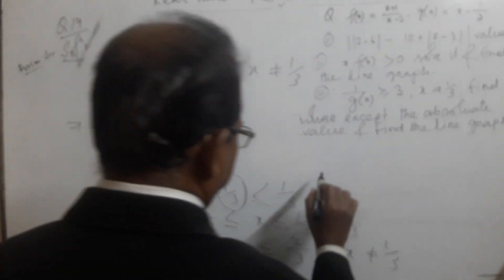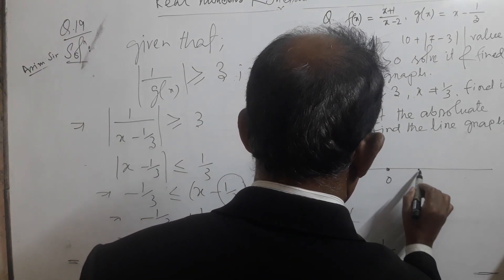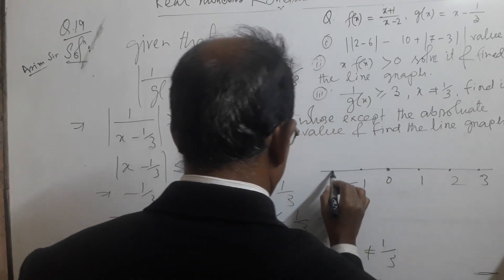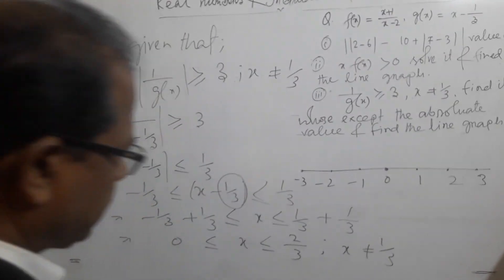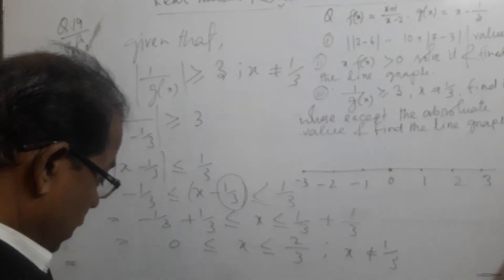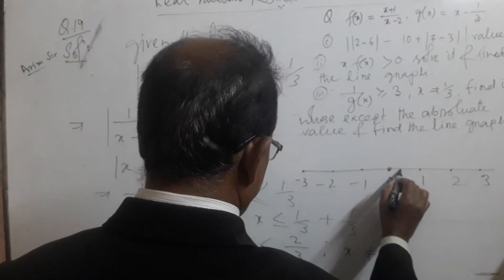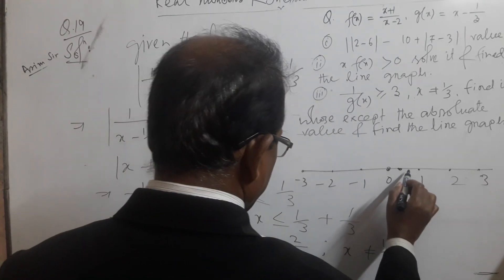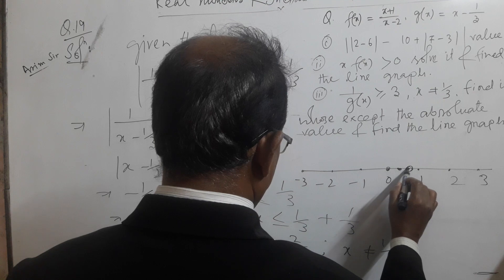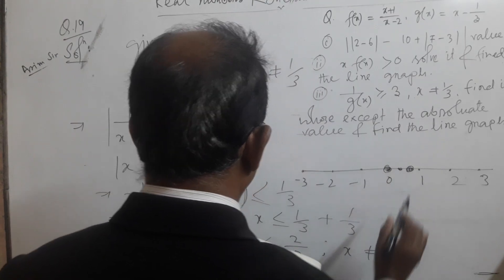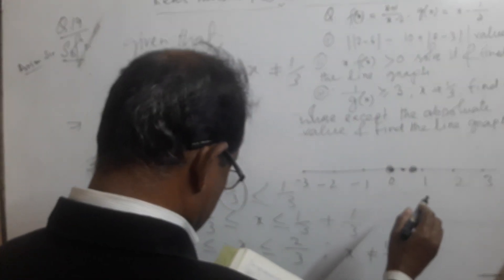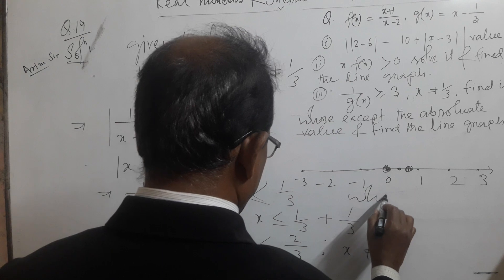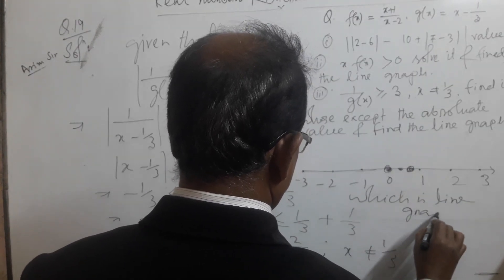Now we create the line graph. The number line has points 0, 1, 2, 3, minus 1, minus 2, minus 3. Since x is not equal to one third, the point at one third is not included. The interval from 0 to 2/3 is shown, with one third being an open point — not countable — and 0 and 2/3 are countable closed points. This is the complete line graph.